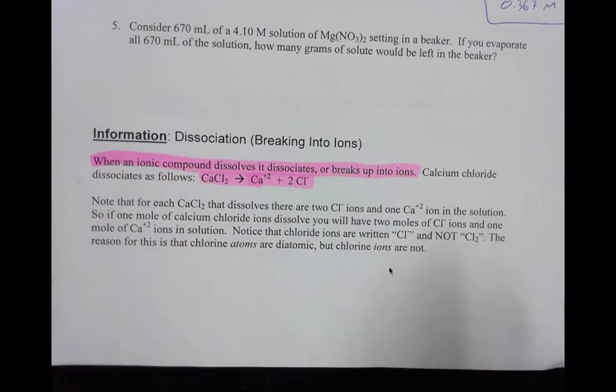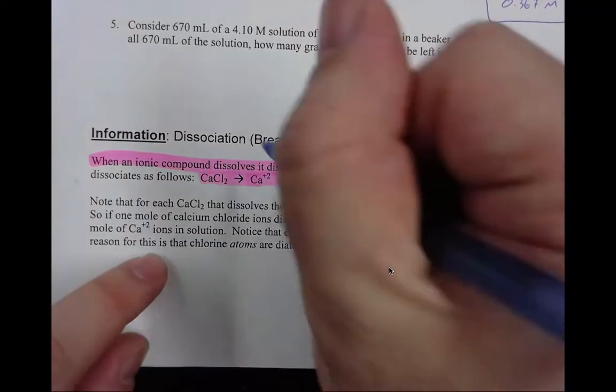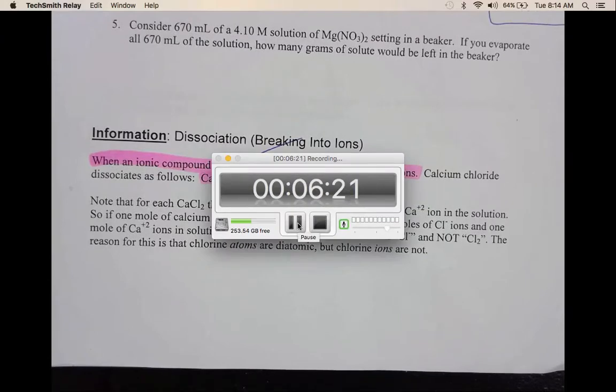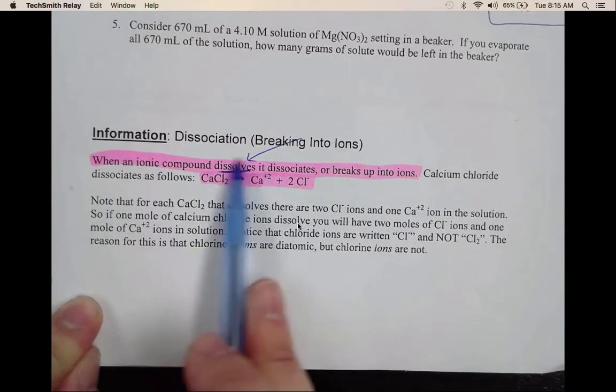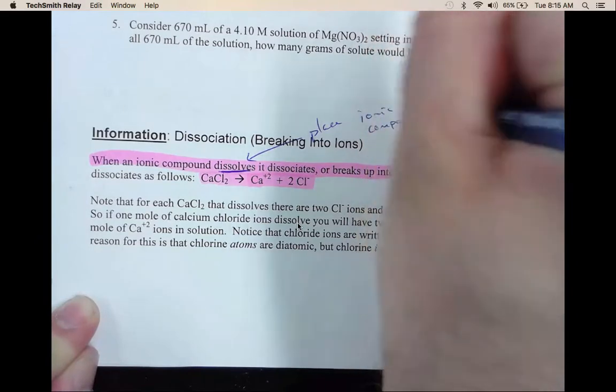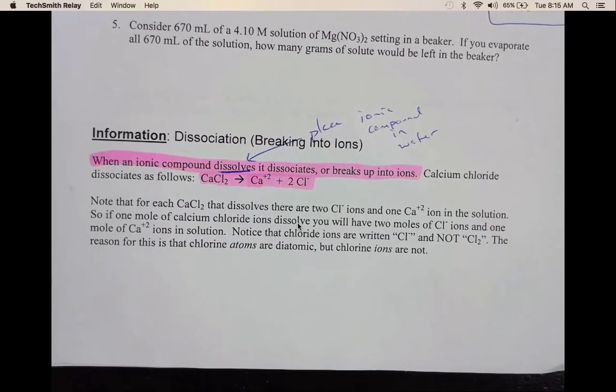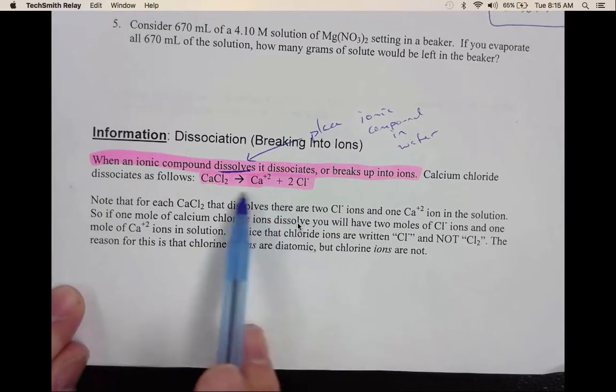So the next section, we are learning about dissociation. Dissociation is when an ionic compound dissolves, it dissociates or breaks up into ions. So we need to focus on the word dissolves. So ions will dissociate. Sorry about that guys, it seems to be working now. So we need to focus on the word dissolves. So it dissolves means when we would put our ionic compound in water. We would place ionic compound in water. So remember guys, we need to focus on the word ionic compound. Covalent compounds will not dissociate. They don't dissociate because of the charges.